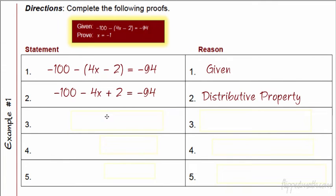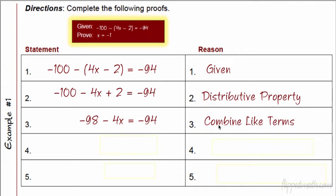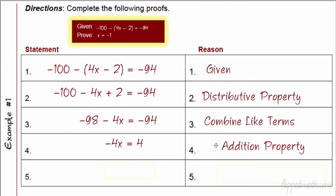Then what would happen? I would combine like terms — combine the negative 100 with the positive 2 and get negative 98. Someone else might do plus 100 on each side and use the additive property; that's okay, but that's not what I'm going to do. I'm going to add those like terms together and get negative 98 minus 4x equals negative 94. I combined like terms, so that's my reason. Now, the addition property says you can add to both sides of the equation — that's what I did on step 4. It's not what I do going from step 2 to 3; there you just combine like terms. Students often get confused with that distinction.